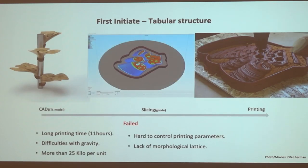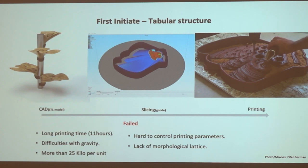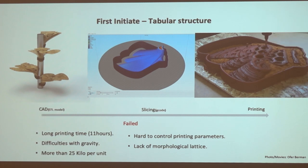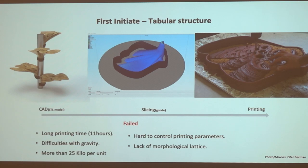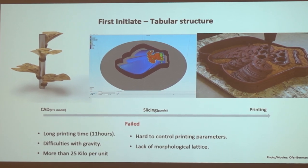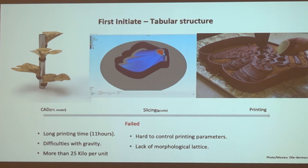We designed a three-dimensional model of a tabular structure joined to a column. It was 3D printed using a slicing software. Then we realized that we needed to find a better method to print our artificial corals. The printing time was extremely long and the weight-to-shadow ratio was bad. In order to compete with the scale of a natural reef, it was important to find a morphological solution to make the printing process more efficient.